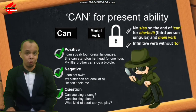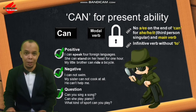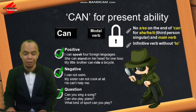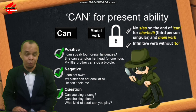Moving on to the first part — kita masuk kepada bagian pertama, yaitu 'can' for present ability. Bagaimana menggunakan 'can' untuk berbicara tentang kemampuan, keahlian, atau sesuatu yang bisa kita lakukan pada saat sekarang ini? 'Can' ini merupakan modal verb yang memiliki beberapa peraturan.